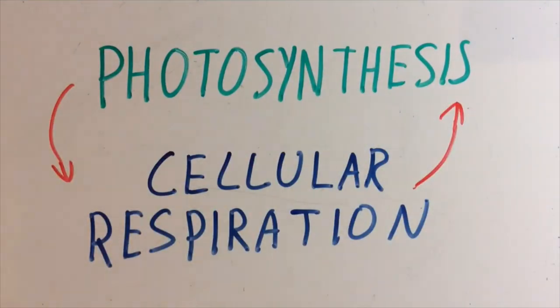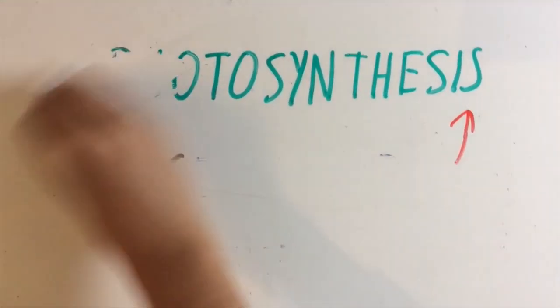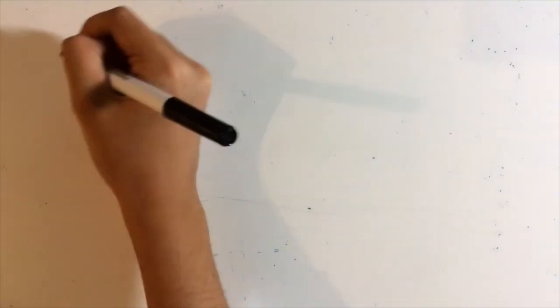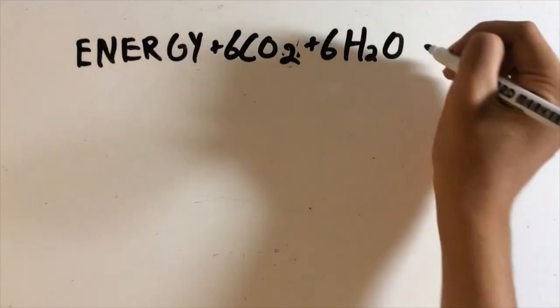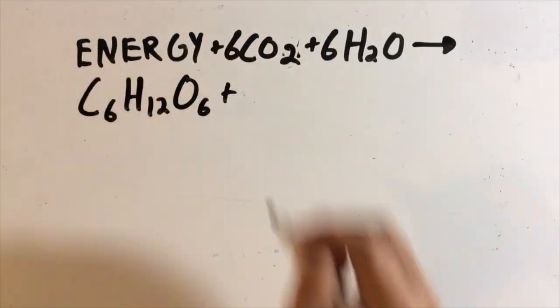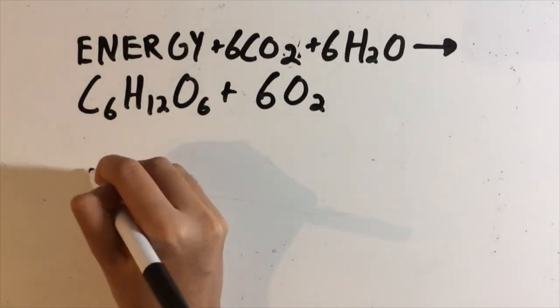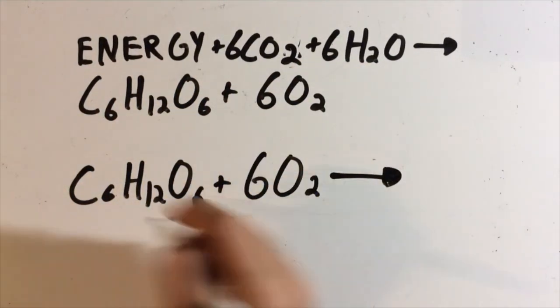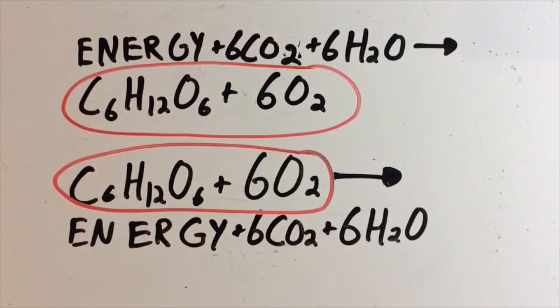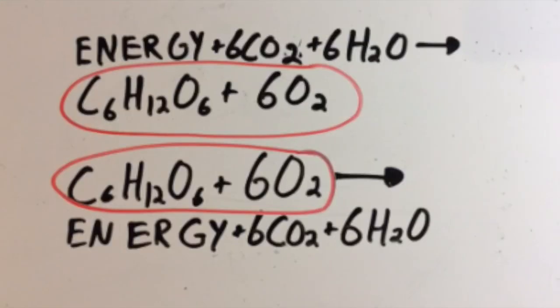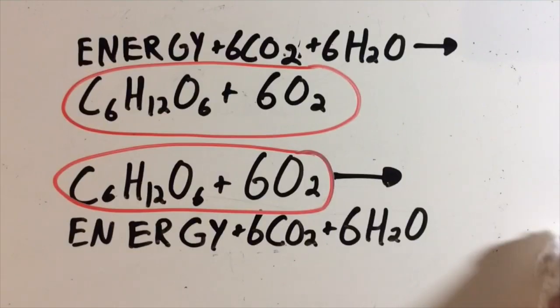Look at the equations for both processes. The end products for the photosynthesis equation are the starting products for cellular respiration, and vice versa. The equation for cellular respiration is: C6H12O6 plus 6O2 produces energy plus 6CO2 plus 6H2O.